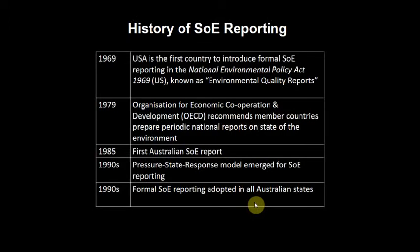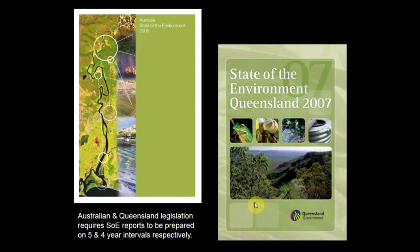State of environment reporting really began in 1969 in the US with the National Environmental Policy Act, which required the president to produce environmental quality reports. That then led in 1979 to the OECD recommending member countries prepare periodic national reports on the state of the environment - in the context of the 1970s being a time of growing environmental concern. 1985 was the first Australian state of environment report, and there have been multiple reports since. This is the cover of the Australian state of environment report in 2006, and there's one from 2007 in Queensland. Widely adopted in Queensland and around the world.